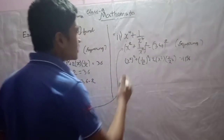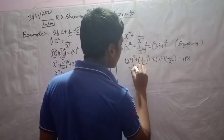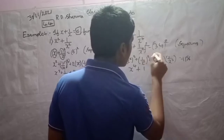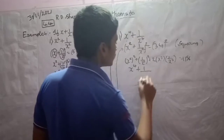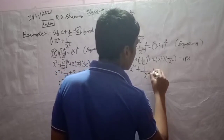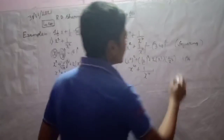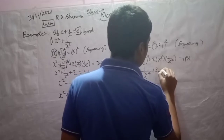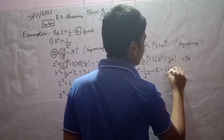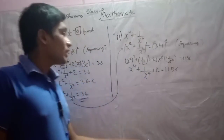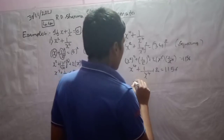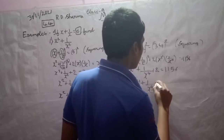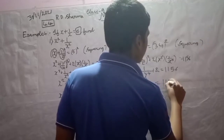So x squared whole squared is x to the power 4, and 1 divided by x squared whole squared is 1 divided by x to the power 4. The x squared and x squared cancel, leaving plus 2 equals 1156. Therefore x to the power 4 plus 1 divided by x to the power 4 equals 1156 minus 2, which is 1154.